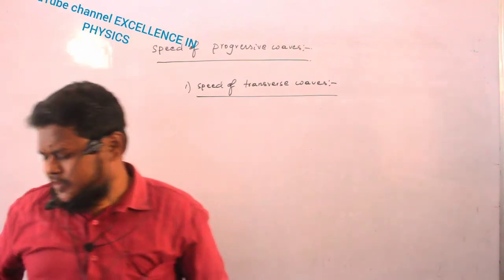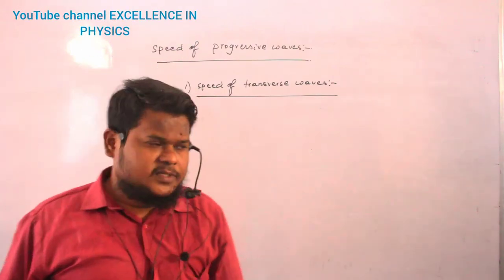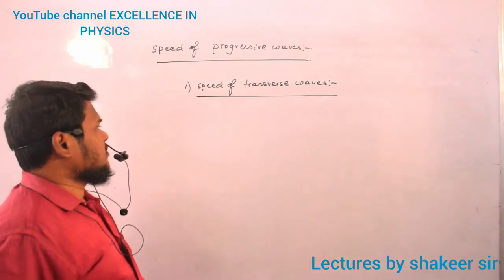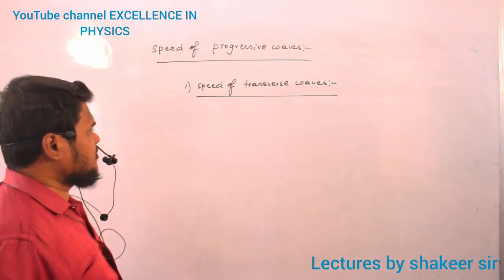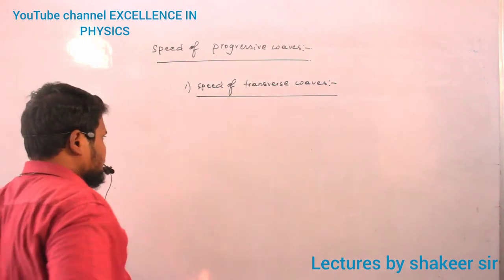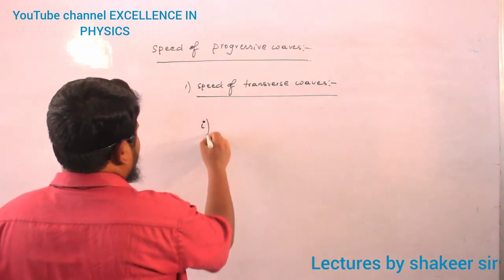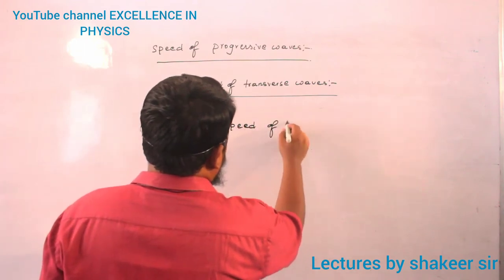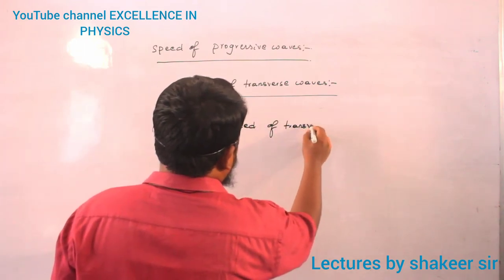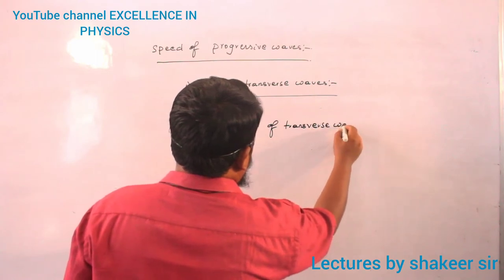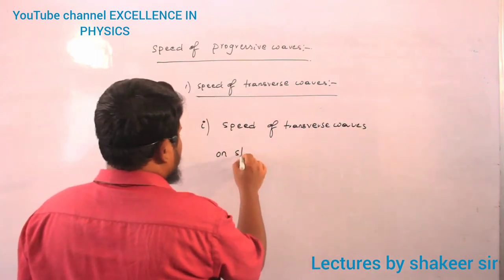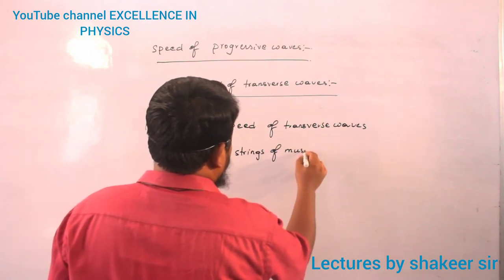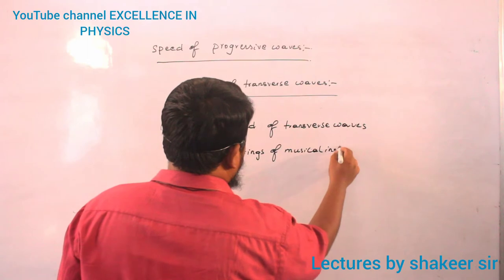We will study progressive waves. Progressive waves means we will study the speed of transverse waves as well as longitudinal waves. First: speed of transverse waves — specifically, speed of transverse waves on strings of musical instruments.